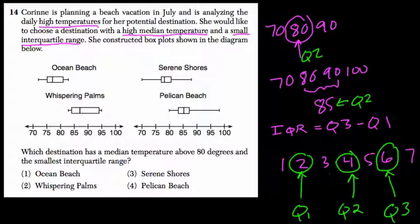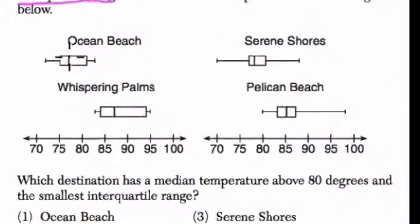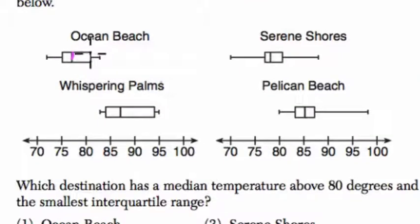So here, in this problem, we're looking at these four situations, and we're asked which has a median temperature above 80 degrees and the smallest interquartile range. What's nice about the box and whisker plot - if you think about it, this line in the middle here, that's always Q2. This line here is Q3, and this line is Q1. So what you're seeing in this box is the difference between Q3 and Q1. In other words, this box is the size of the interquartile range.